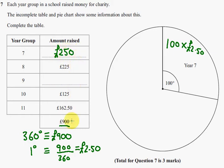Now, if all of it is £900, then I simply take away all the other figures to leave me with how much the Year 9s raised. So £900 take away 250, take away 225, take away 125, and take away 162 pound 50. Be careful when you're typing that into a calculator, because it is very easy to make a mistake. And the Year 9s raised £137.50.